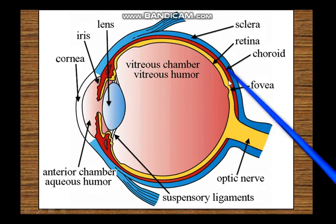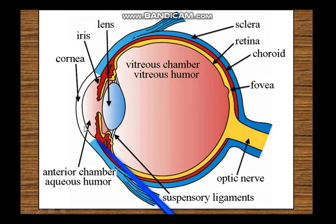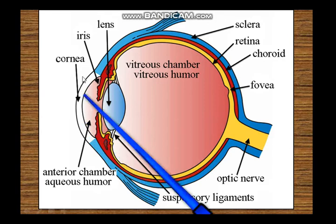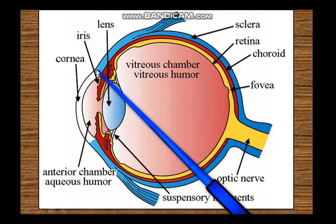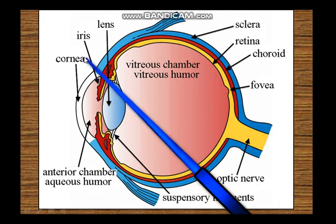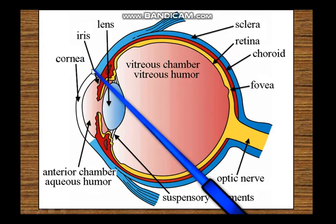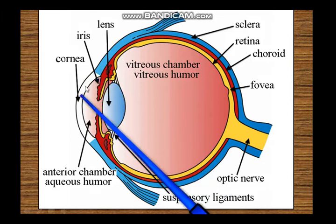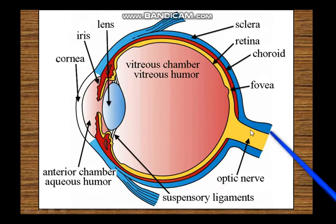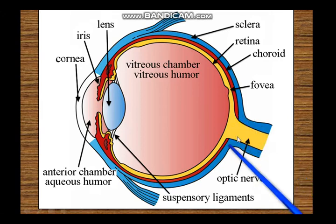The sclera is continuous with the cornea. The posterior five-sixths of the globe is the sclera and the anterior one-sixth is the cornea. The cornea has a greater radius of curvature than the sclera, forming part of a smaller circle. At the sclerocorneal junction — the limbus — there is a small depression between the two curvatures. The perforated region of the sclera where the optic nerve filaments enter is the lamina cribrosa sclerae.